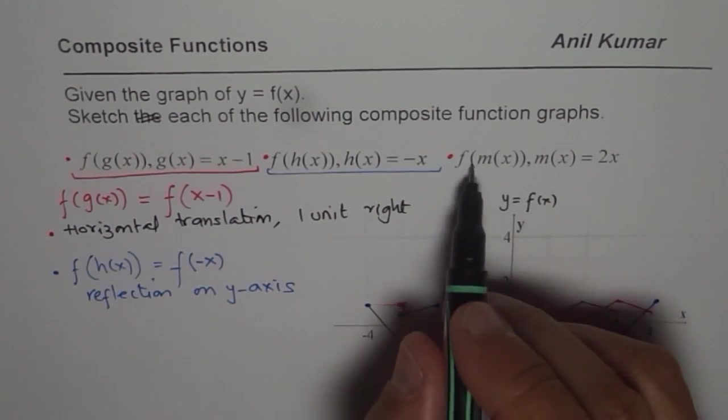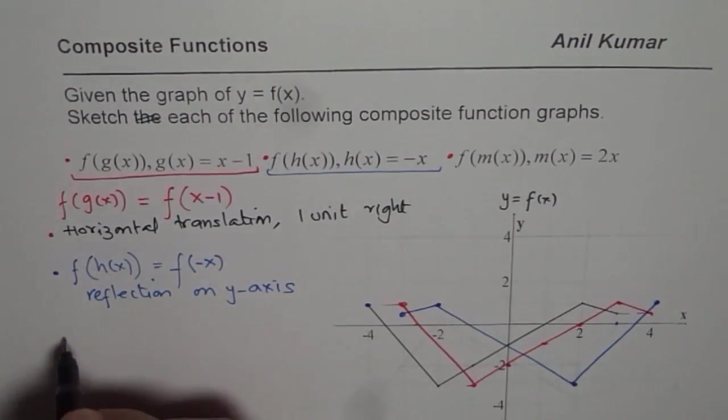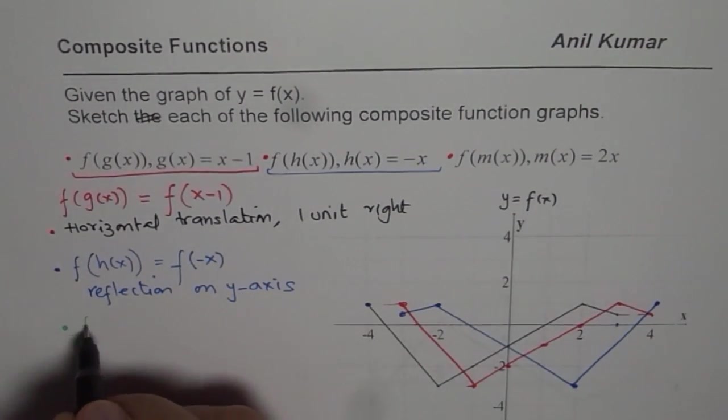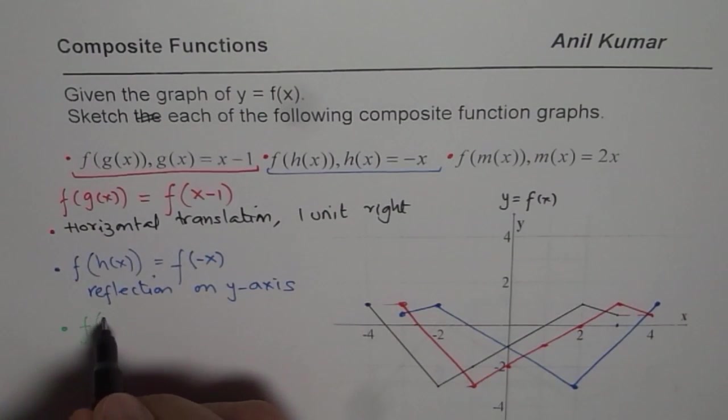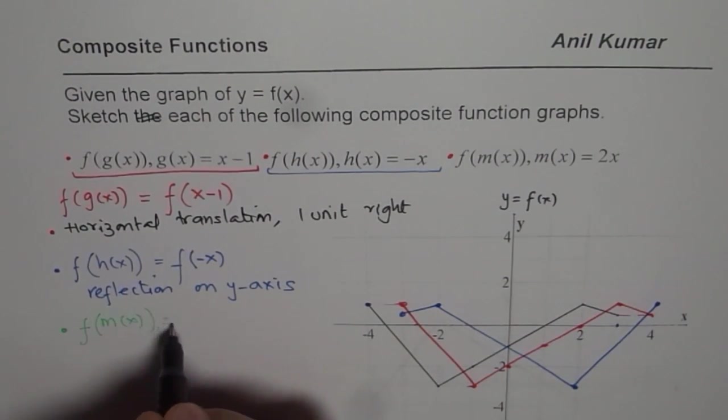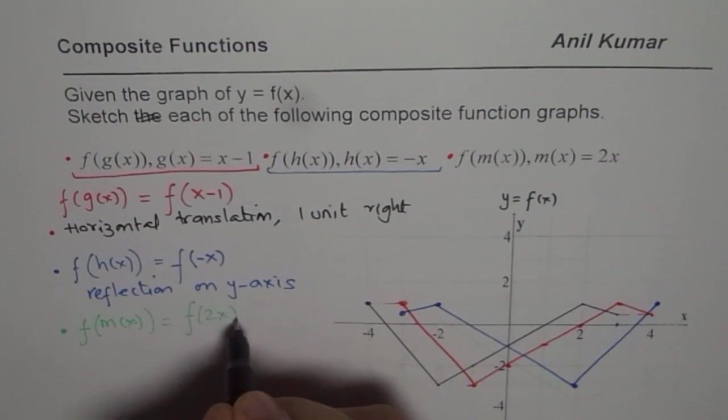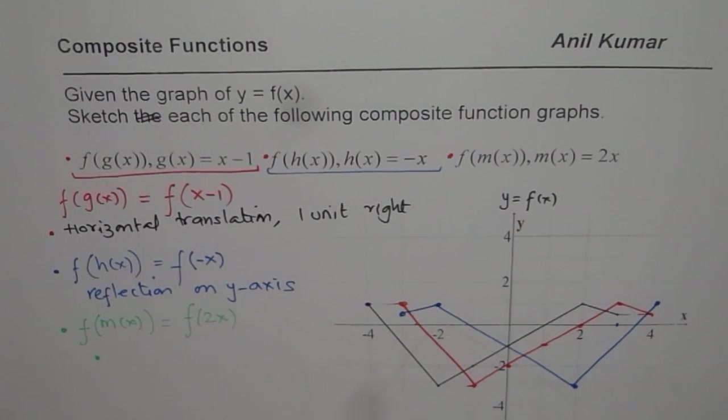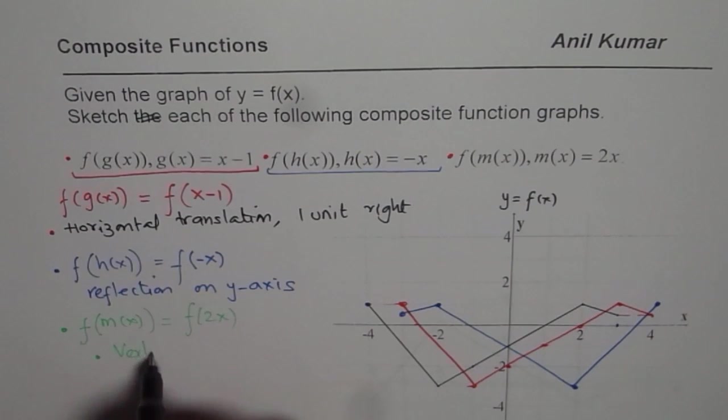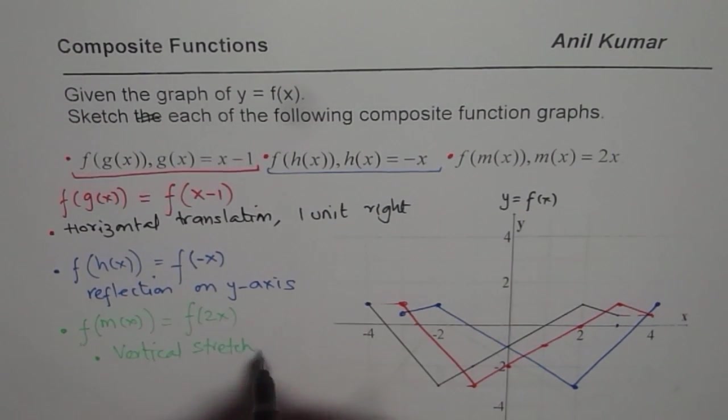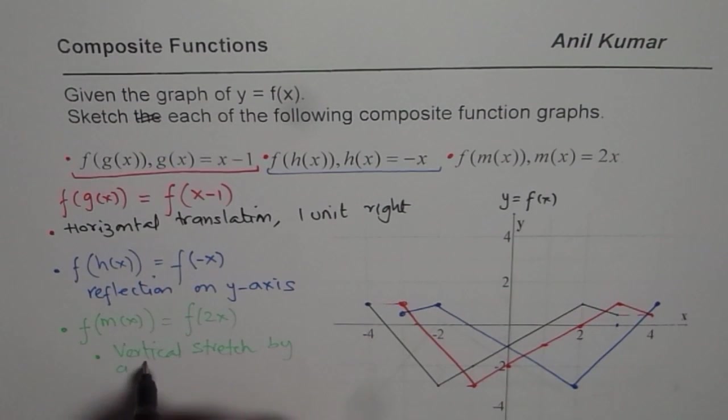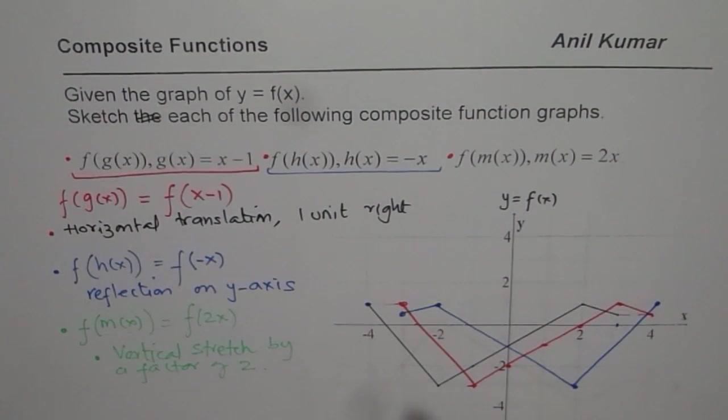So last one, I hope I can leave that for you. So here we want f of m of x. I am doing it in a very light color. m of x is 2x, so it becomes f of 2x. What does that mean? It means vertical stretch by a factor of 2. So from the original graph, everything gets multiplied by 2.